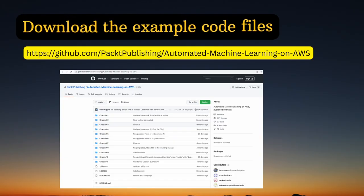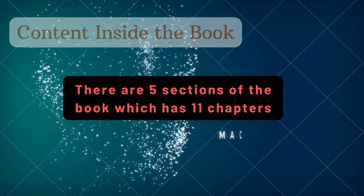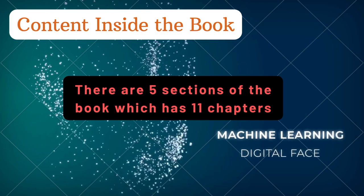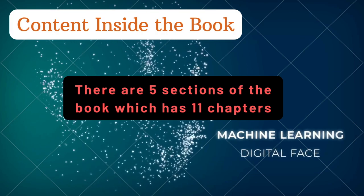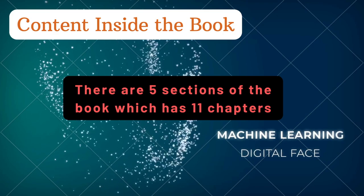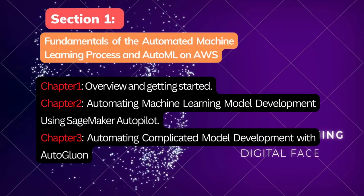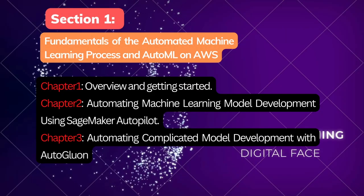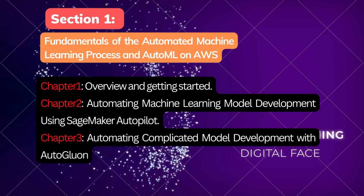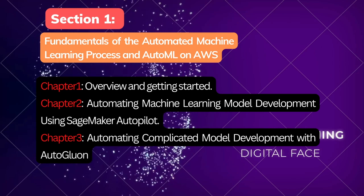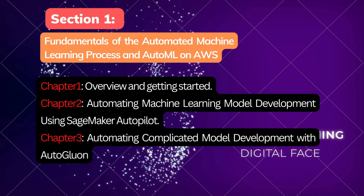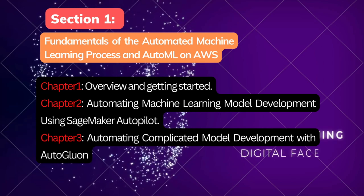You can also download the example code files for this book from the GitHub link. The book has five sections containing 11 chapters. Section 1 covers the Fundamentals of Automated Machine Learning Process and AutoML on AWS. Chapter 1 contains an Overview and Getting Started.